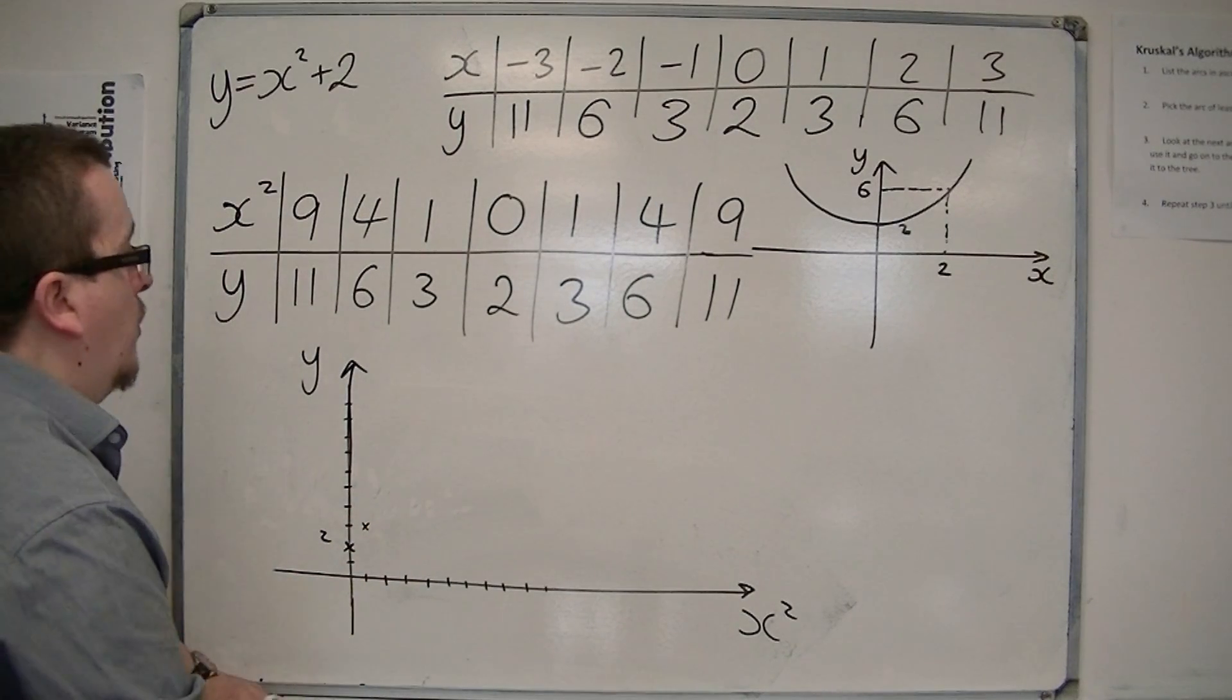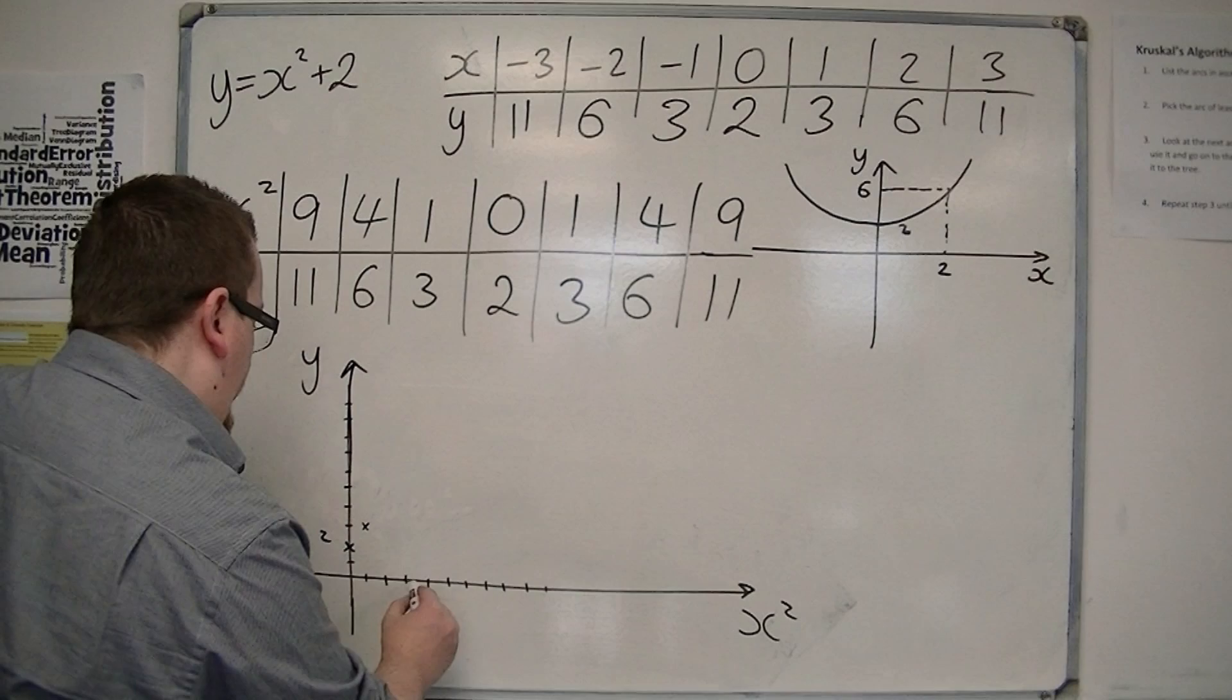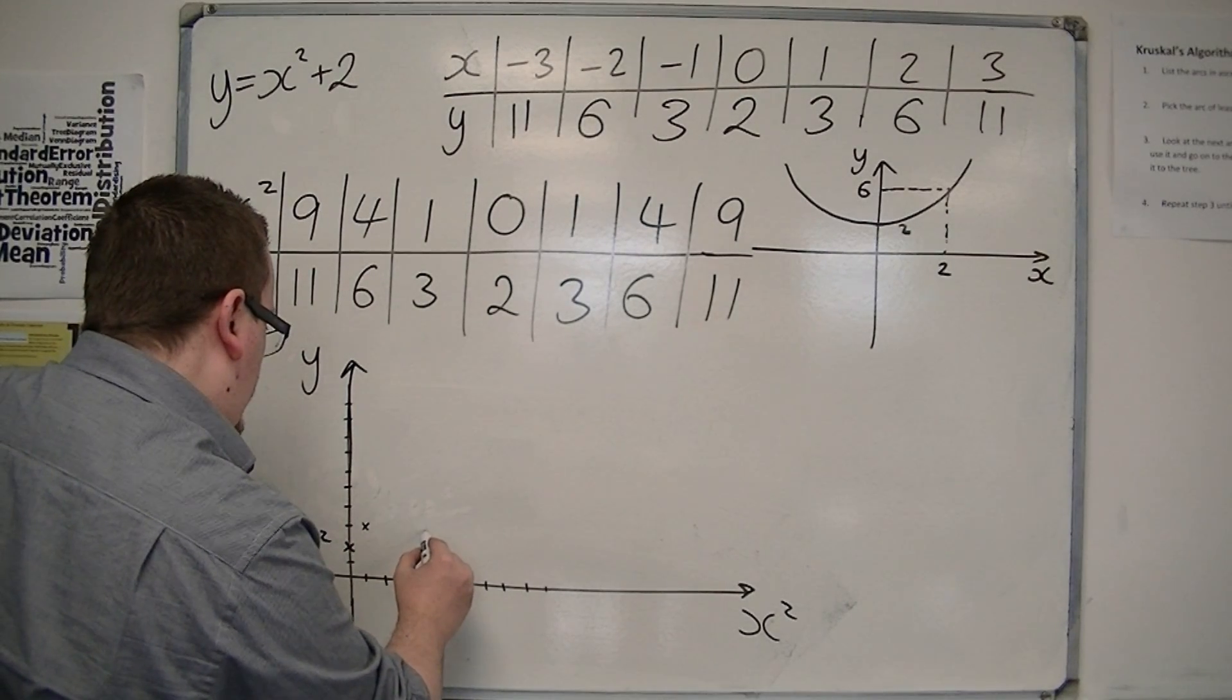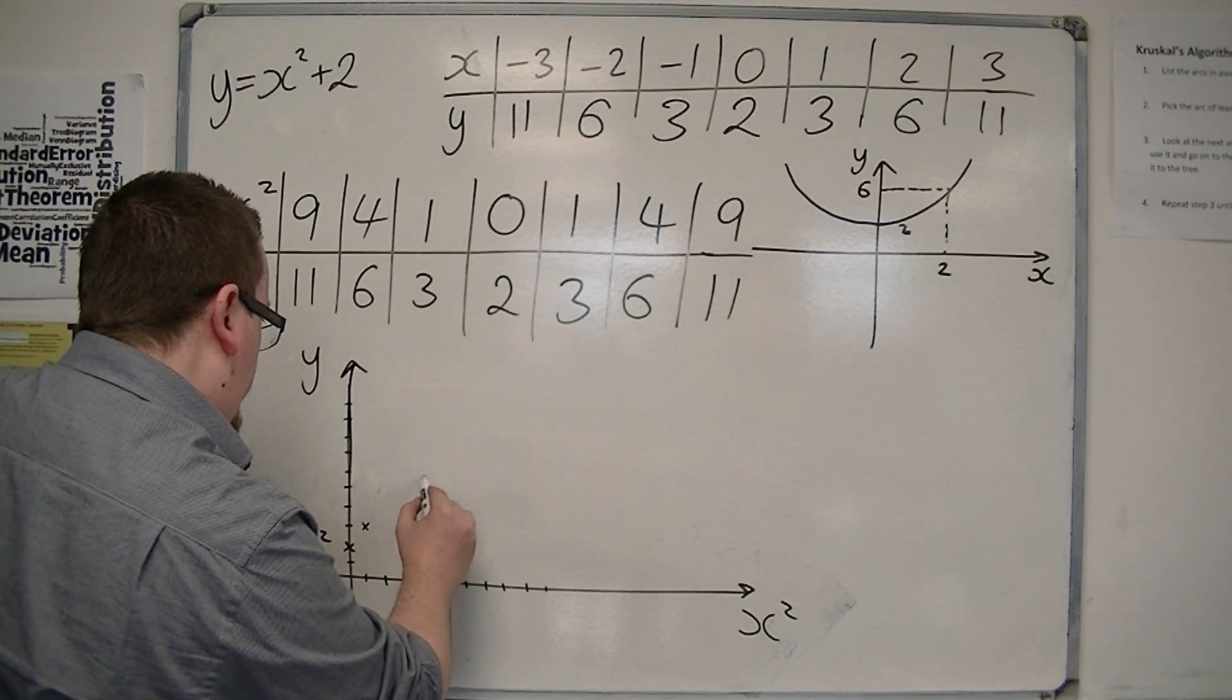OK, so I've got 0, 2. I've got 1, 3. I've got 4, 6. So 1, 2, 3, 4, 6. So there's 3, 4, 5, 6.